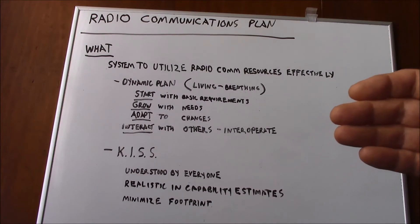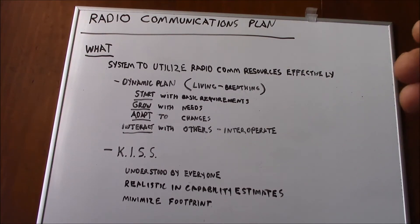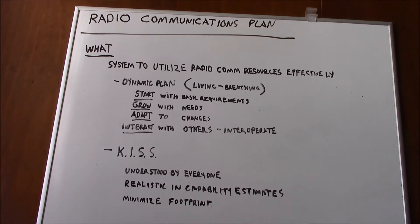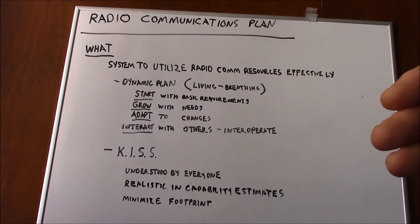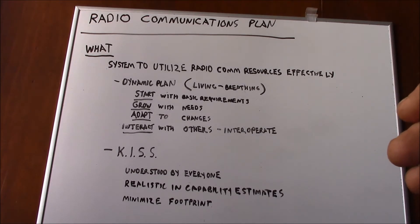Be realistic in estimating your plan's capability. It's better to underestimate than overestimate. If you're tasked with a specific function of the communications plan to support something further away than your equipment is capable of supporting, you need to speak up and let them know ahead of time what changes need to be implemented and how much time it's going to take. And minimize your RF footprint. If you are operating within the confines of a 500-acre piece of property, there's no reason to set up field-deployable adjuncts or anything that is just going to increase your radio signal's footprint.